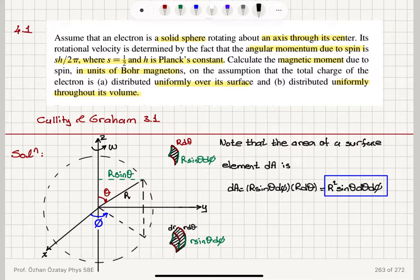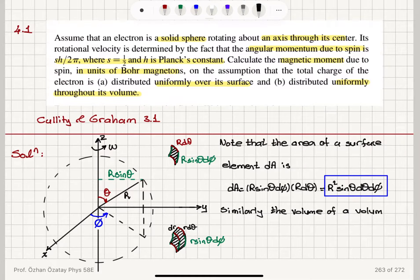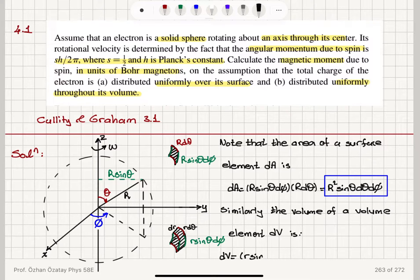For the volume element, we add the third dimension dr. The volume dV is the product of the three lengths: R·sinθ·dφ, R·dθ, and dr, giving dV = r²·sinθ·dθ·dφ·dr.